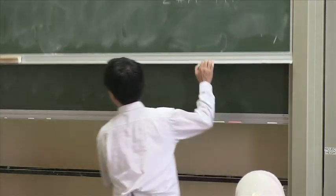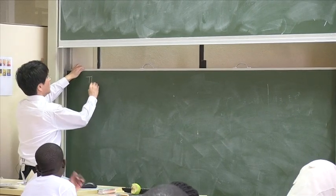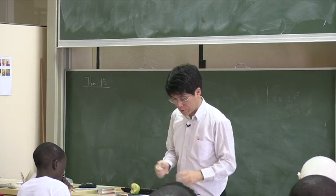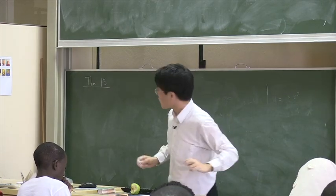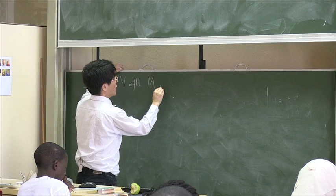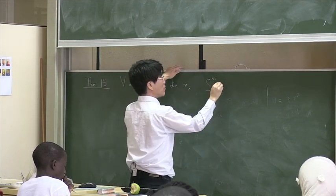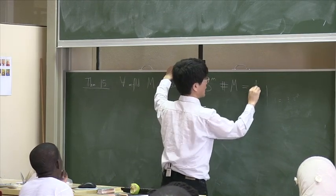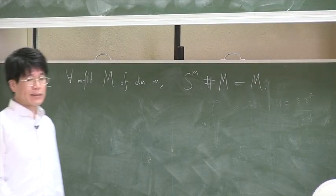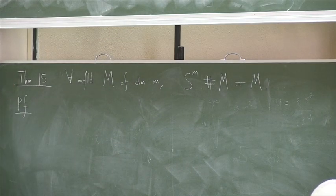So the theorem. The theorem is that, indeed, spheres play the role of 0 with respect to the connected sum. So for every manifold, M of dimension m, it is a case that S^m connected sum with M is, again, equal to M. And the proof is obvious. But it's nice to see how obvious it is. Here's how it goes.